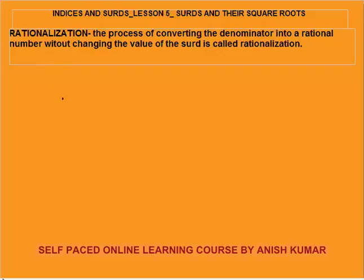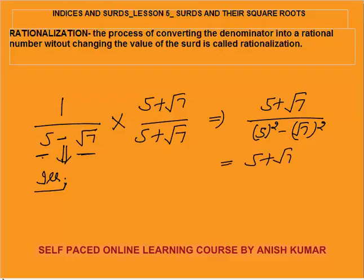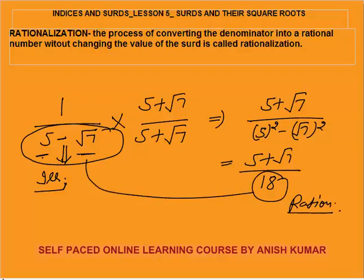For example, a number like 1 upon 5 minus root 7. You can see that the denominator is an irrational number. I want to convert the denominator into a rational number. This is 5 minus root 7, so I will multiply and divide by the conjugate, which is 5 plus root 7. In the numerator I get 5 plus root 7. The denominator is a minus b into a plus b, which is a squared minus b squared — that is 5 squared minus root 7 squared, giving 25 minus 7, which is 18. So I have converted the denominator from irrational to rational.